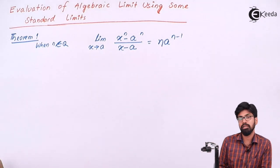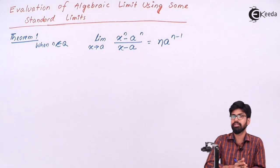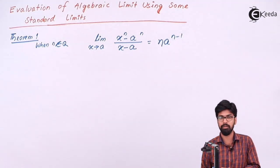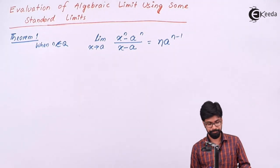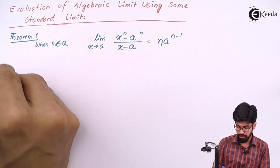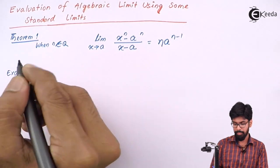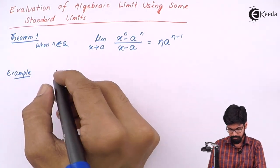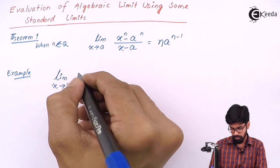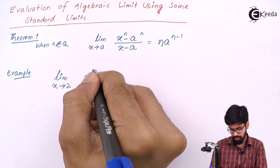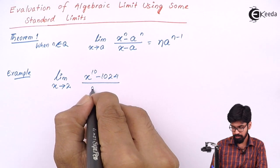How this formula is derived is not included in this part, so we don't have to bother about how the theorem comes. Better we learn the formula and then proceed further. Let us solve this example: limit x tends to 2, x raise to 10 minus 1024 upon x minus 2.